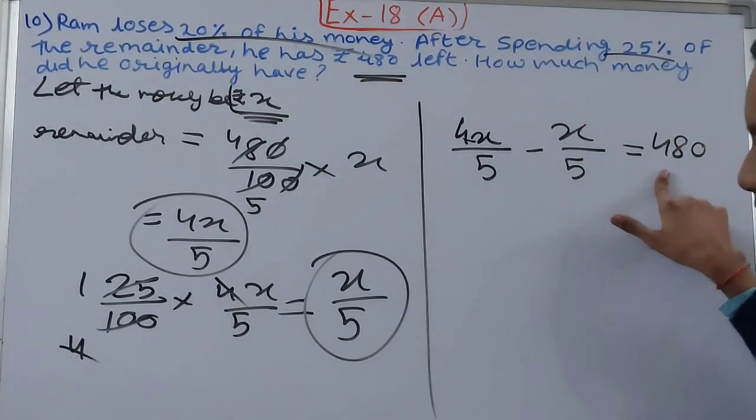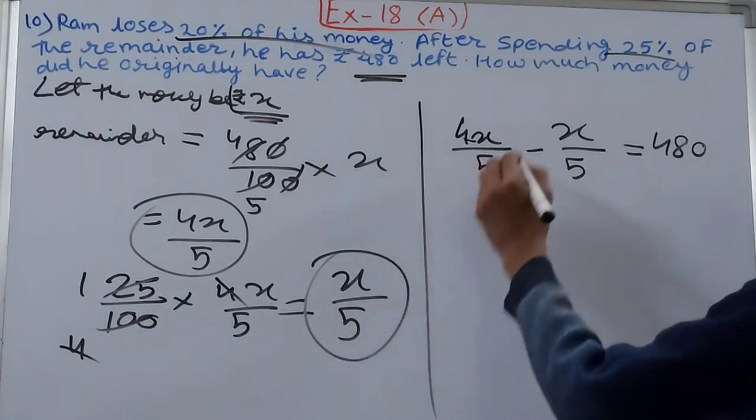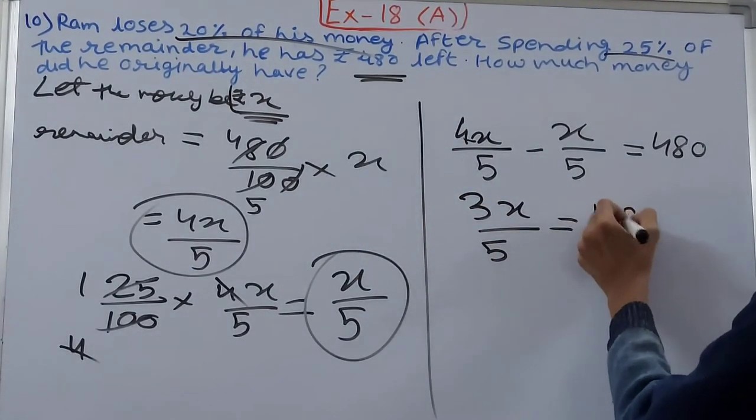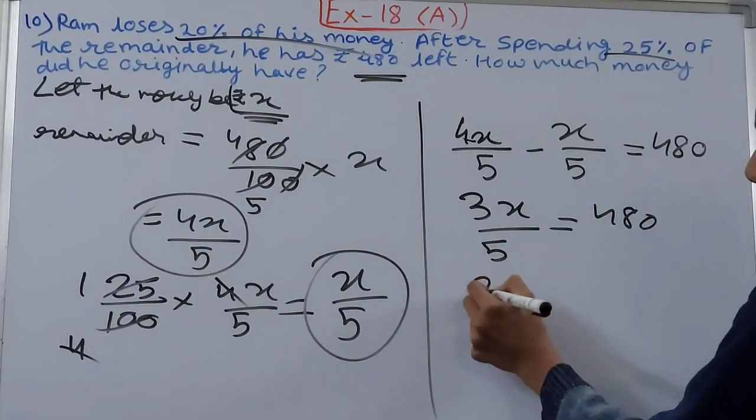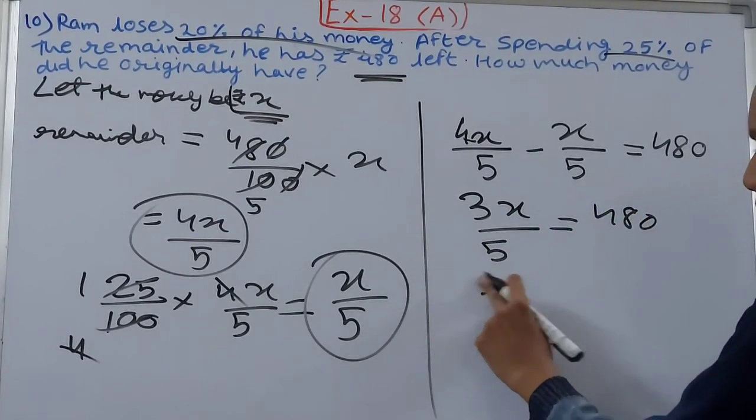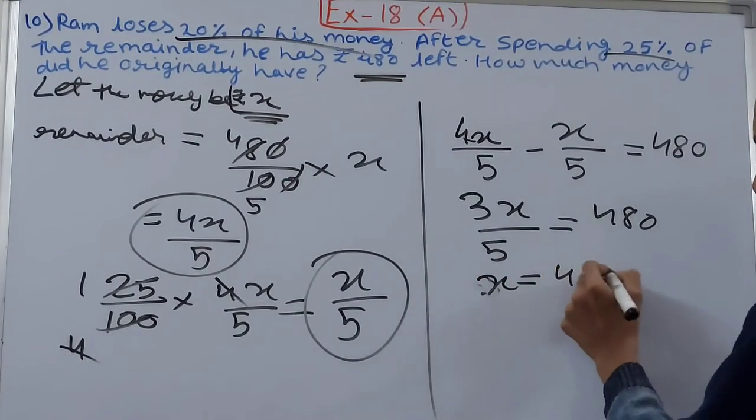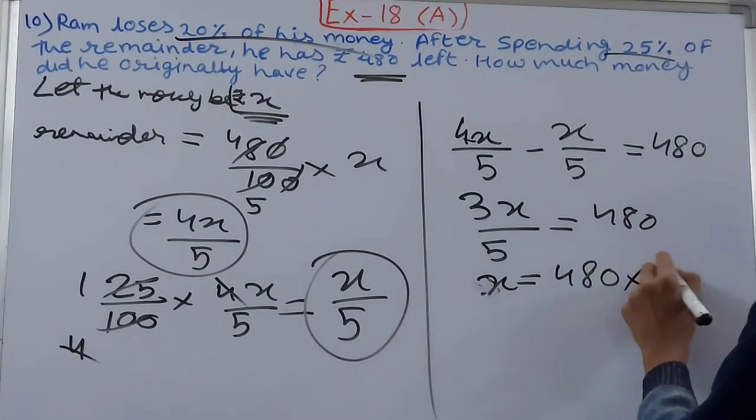After that he was left with 480. So you can solve this now. 3x upon 5 equals 480. x equals how much?